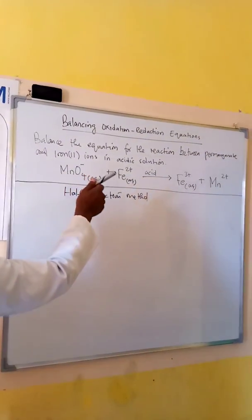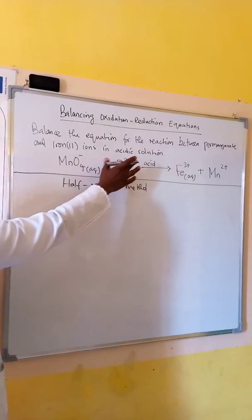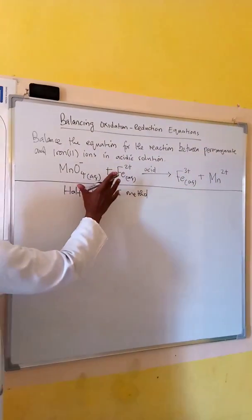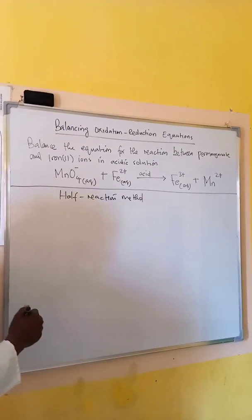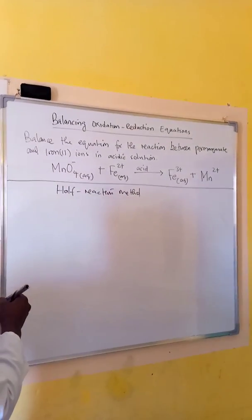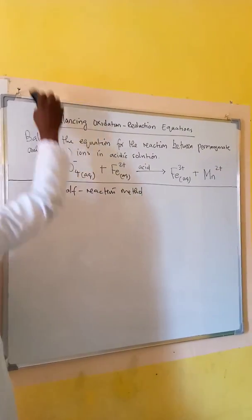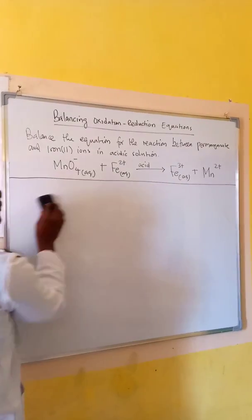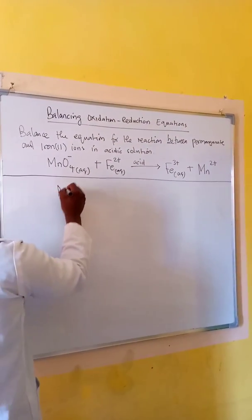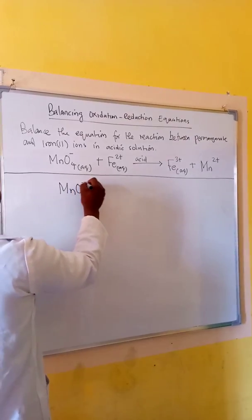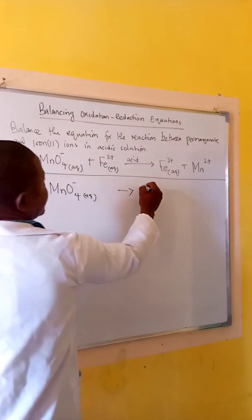Balance the equation for the reaction between permanganate ion and iron(II) ion in acidic solution. We can balance in acidic solution as well as in basic solution. Let's balance in acidic solution using the half-reaction method. The first thing you do is to separate the two reactions into oxidation and reduction.